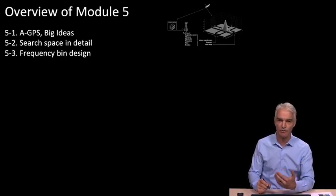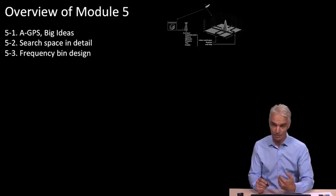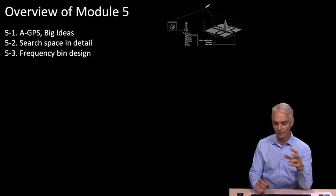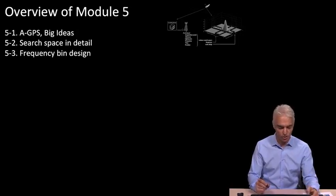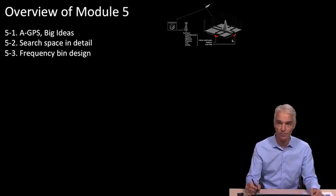For one thing, kind of obvious, the receiver itself doesn't need to decode the data from the satellite. And less obvious, but more profound, with that data from the network, we can reduce the search space. And so, we're going to spend a lot of time looking into how does that search space that we just got introduced to in the previous module, how do we get it reduced so that we don't have so much to search?